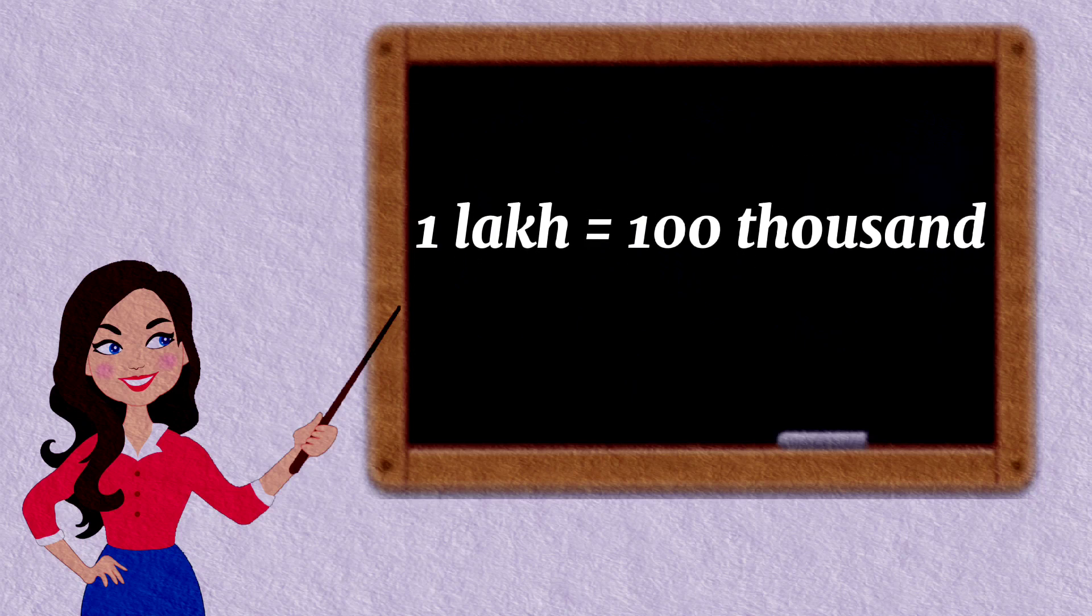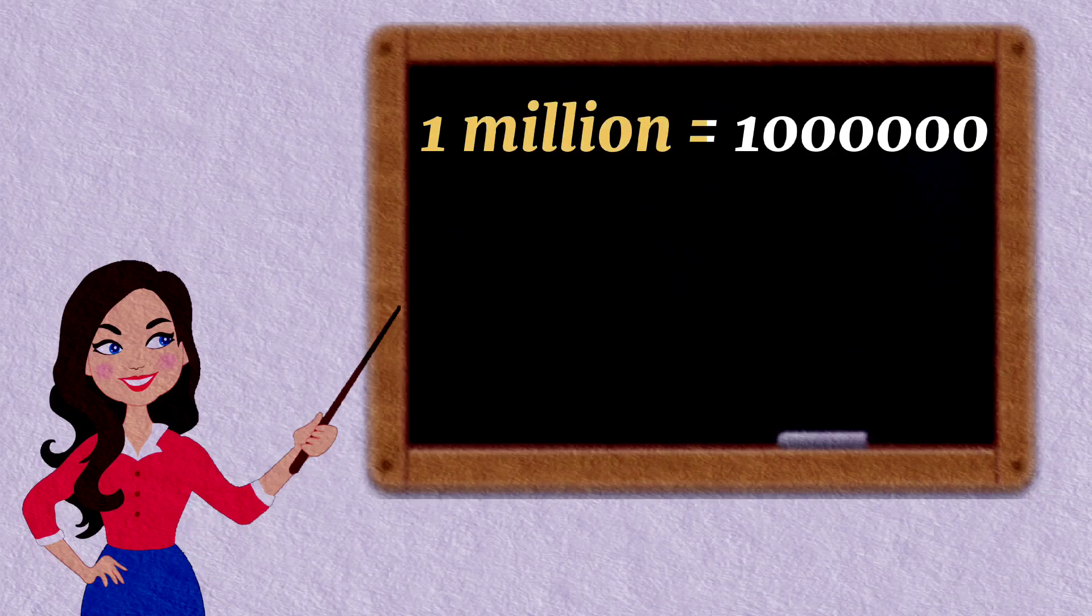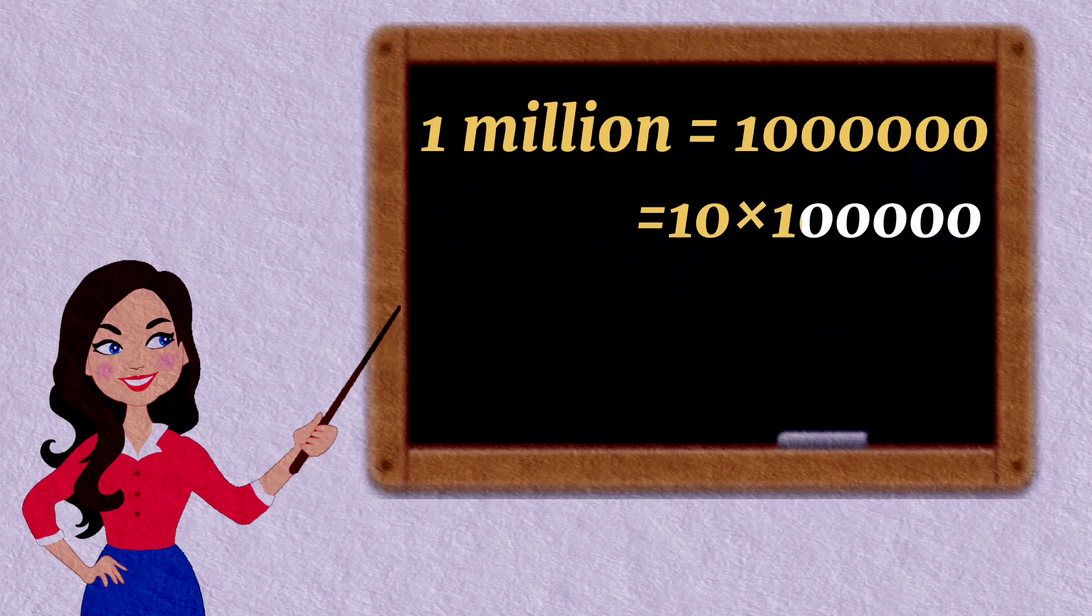One million is equal to 100,000. One million is equal to one followed by six zeros, which we can split and write as ten into one lakh, which is equal to ten lakh.